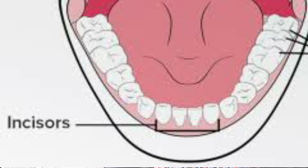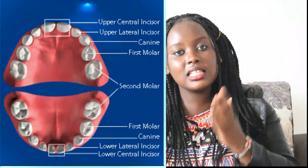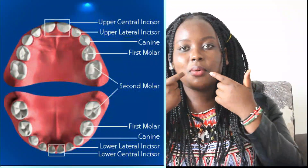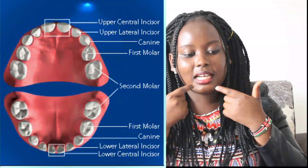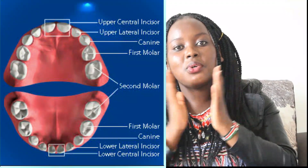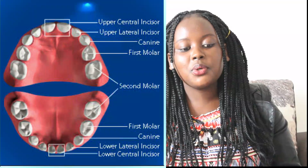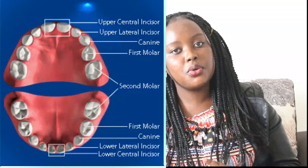We have four upper and four lower incisors, making a total of eight. The two middle ones are known as the central incisors, and the ones adjacent to the two central incisors are known as the lateral incisors. As mentioned, they all have one single root.